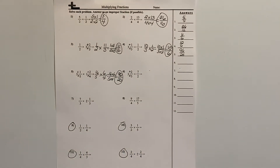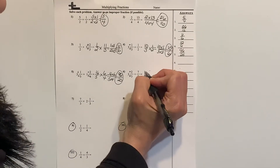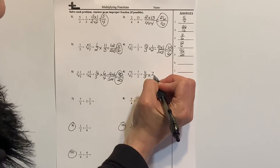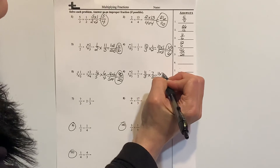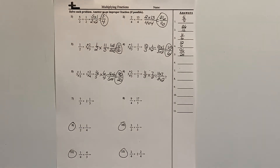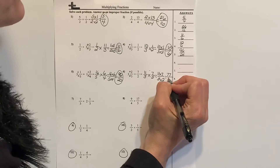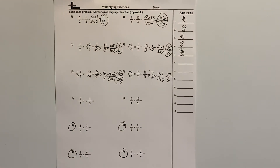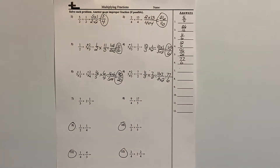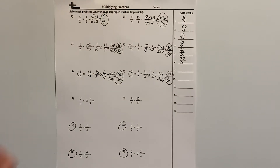Number 6: I've changed the mixed number to an improper fraction — 3 times 3 is 9, plus 2 is 11, so 11 thirds. Then 11 thirds times 5 halves is the same as 11 times 7 over 3 times 2. So 11 times 7 is 77, and 3 times 2 is 6, giving me 77 sixths.